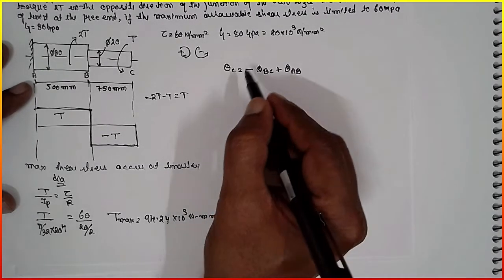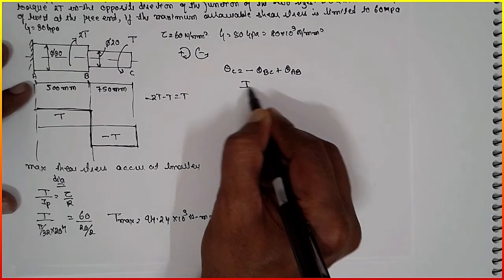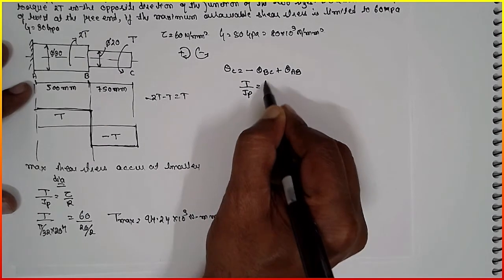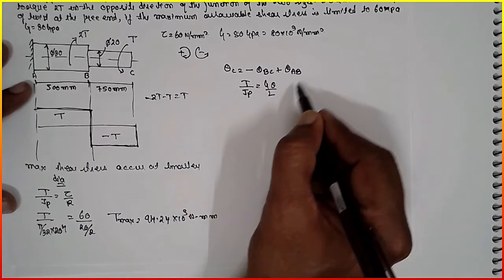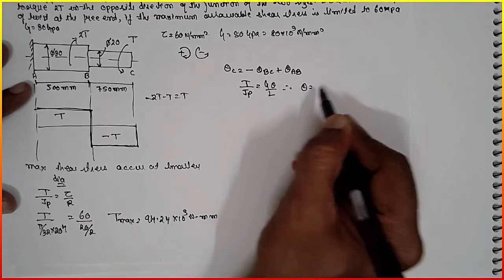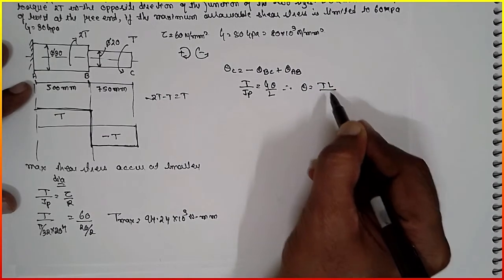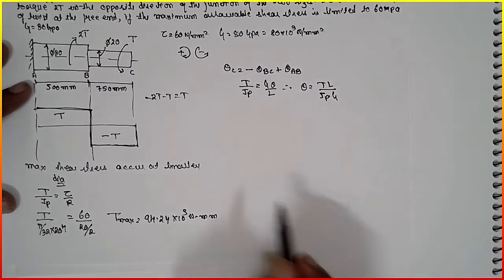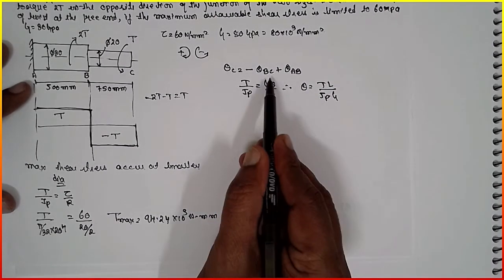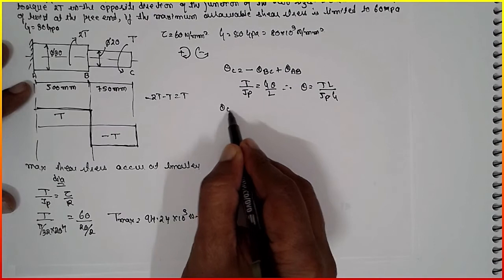We know that T divided by Jp is equal to G theta divided by L. Then the theta becomes T L divided by Jp into G. I am going to substitute in place of this theta value. Theta C is equal to...